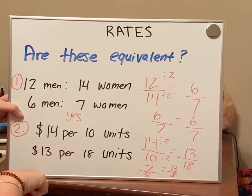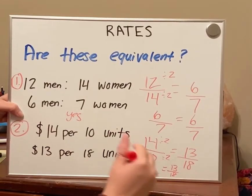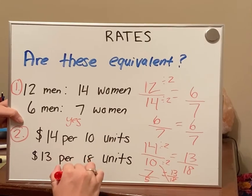7 fifths and 13 over 18 is never going to equal each other. So no, these are not equivalent.